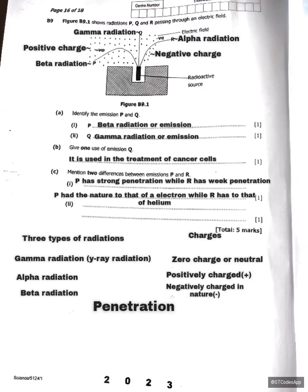To summarize the differences: point one — P (beta) has strong penetration while R (alpha) has weak penetration. Point two — P is negatively charged in nature while R (alpha particle) is positively charged in nature. I hope you have enjoyed this presentation. Kindly subscribe to my YouTube channel, share the video, and comment in the comment section.